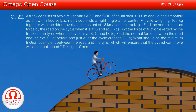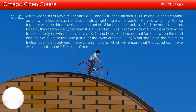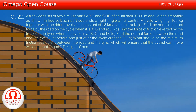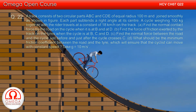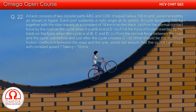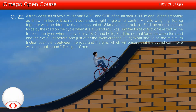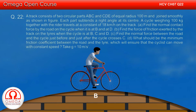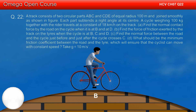Part A: find the normal contact force by the road on the cycle when it is at B and D. Part B: find the force of friction exerted by the track on the tires when the cycle is at B, C and D. Part C: find the normal force between the road and the cycle just before and just after the cycle crosses C. Part D: what should be the minimum friction coefficient between the road and the tire which will ensure that the cyclist can move with constant speed.